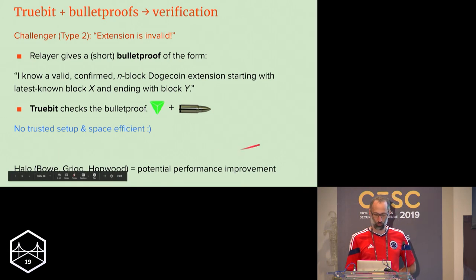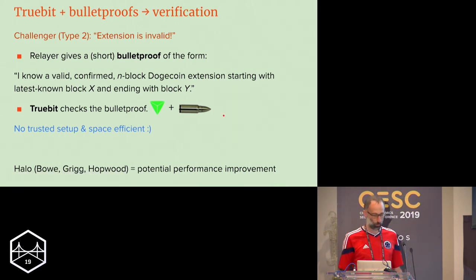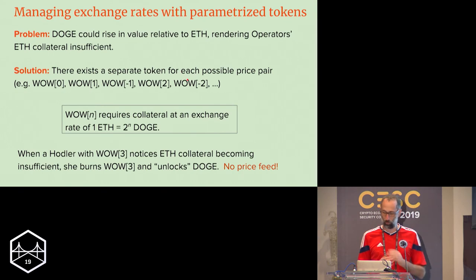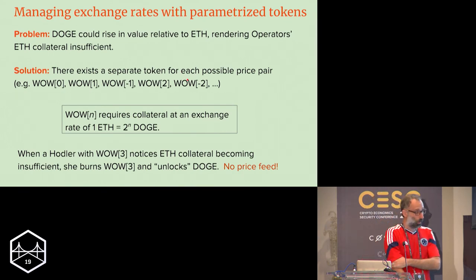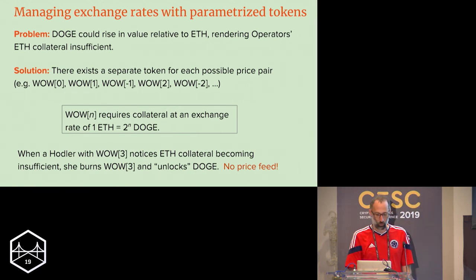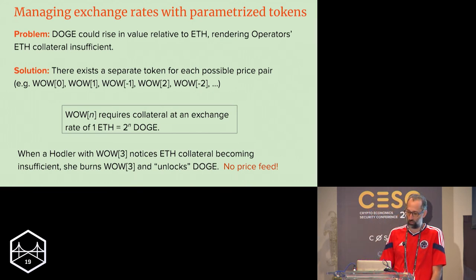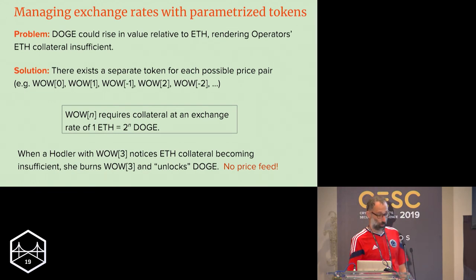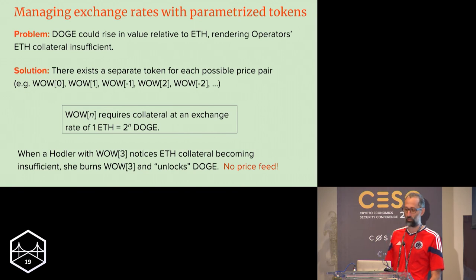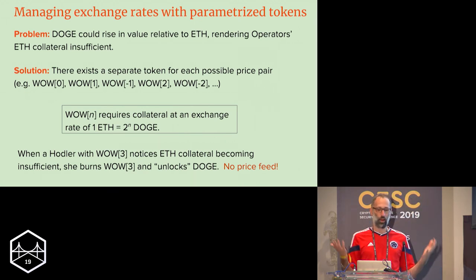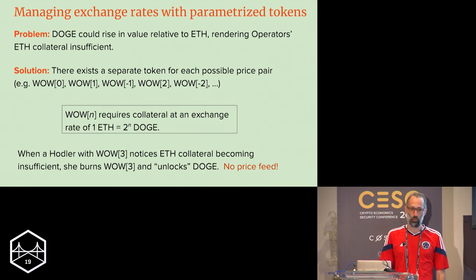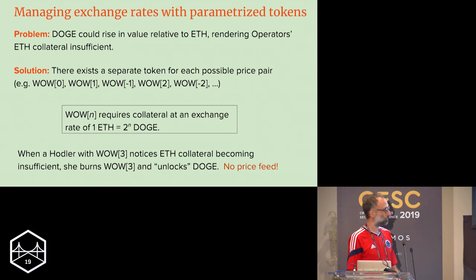You may get performance improvements with recent work, for example the Halo protocol, which does recursive bulletproofs. Getting back to the collateral price: the problem is that the value of Dogecoin could rise relative to ETH over time, meaning whatever collateral you put in on the Ethereum side might not be enough to back up the Doge that's supposedly locked.